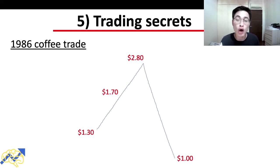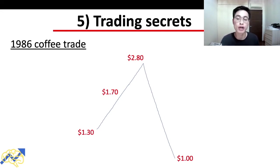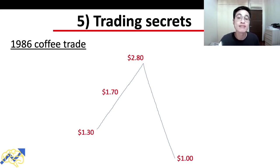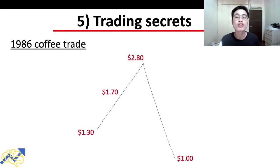So if Larry Hyde had tried to pick the top, he might have ended up at $1 instead of $2.80, and his potential profits would have turned into a loss. There are two main reasons Larry Hyde believes we don't need to pick tops and bottoms: first, it's almost impossible to predict them accurately and we might end up with a loss; second, having some profits is better than none. By exiting at $1.70 he still made profits, but trying to pick tops could have resulted in losses.